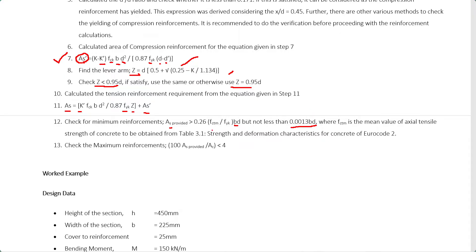FCTM is the tensile strength of the concrete, which can be obtained from Table 3.1 in the Eurocode — it is given as an equation in the code and you can refer to the standard. For maximum reinforcement area, there is also a limit: 100 times the provided reinforcement area divided by AC must be less than 4, where AC is the cross-sectional area of the section.